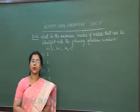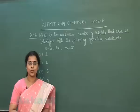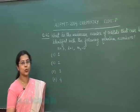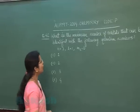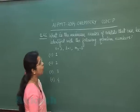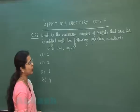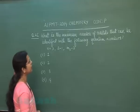Hello students, today we are going to discuss the chemistry paper of AIPMT 2014, code number P. Starting with the first question, question number 46: What is the maximum number of orbitals that can be identified with the following quantum numbers: n=3, l=1, m=0?